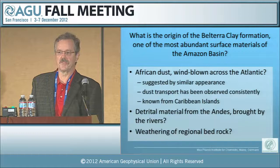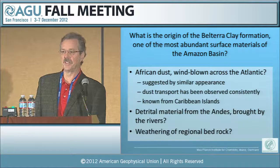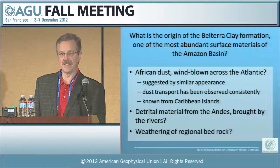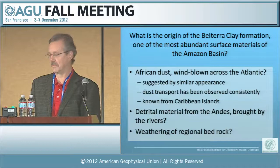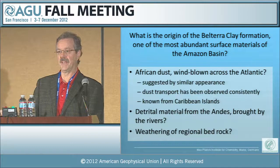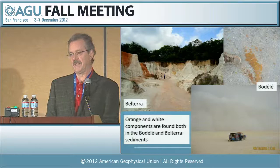Dust transport has been observed consistently. It was observed in the middle of the Amazon for the first time in 1985, during the first ABLE 2A expedition, when dust was found to be a leading dominant aerosol component during some times of the year. Dust as a source material of soils is known from some Caribbean islands and from Bermuda, so it's not an implausible hypothesis. But could it also be detrital material washed down from the Andes, as suggested by Wim Sonbrook, or simply deep weathering of local bedrock?